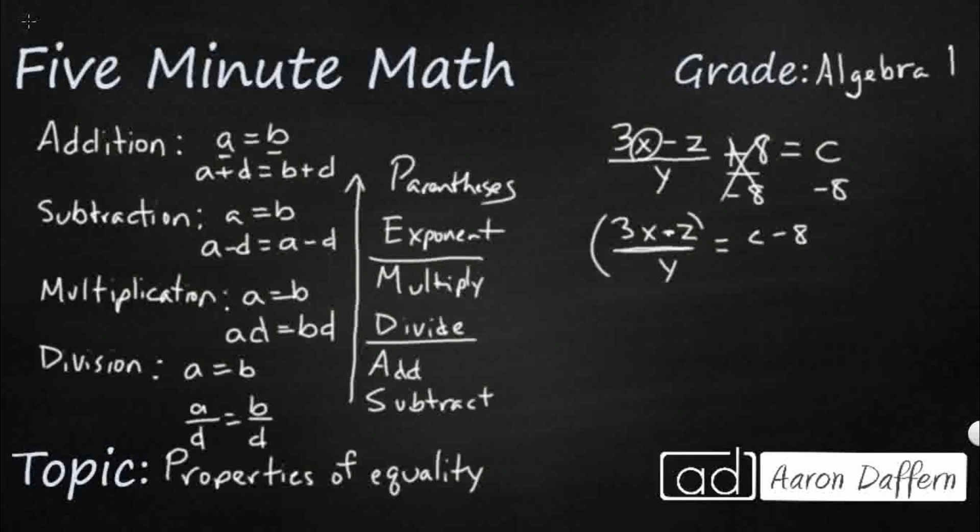So the only way to do that is to multiply this whole side by Y because what I would get then is I would get this Y over this Y, right? Y over Y, and that would cancel itself out. But if I'm going to multiply the left side by Y, the multiplication property of equality says I need to multiply this side by Y so it stays balanced.